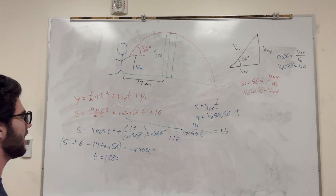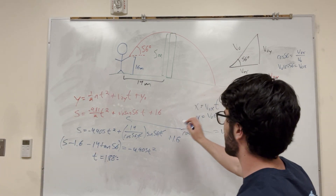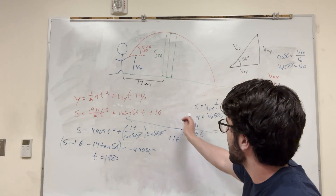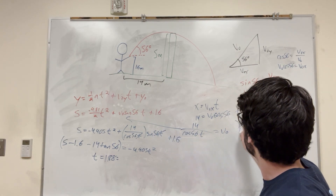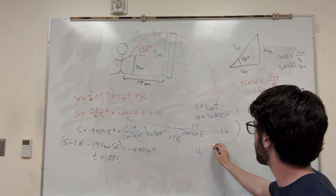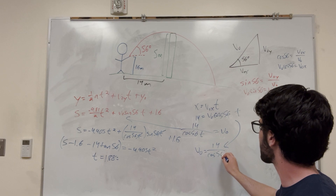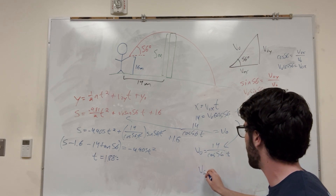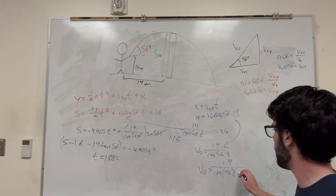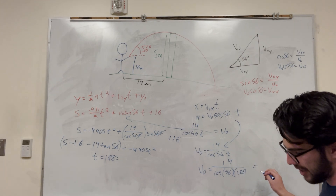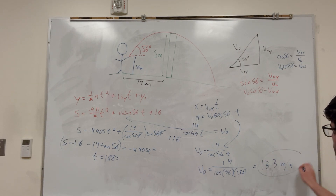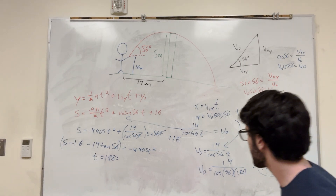So we have time, and then all I need to do is find v-naught. This is a way simpler equation — you can plug it into either one of these. You should probably do that if you're doing a test — plug it into both equations and see if you get the same v-naught. So we have that v-naught is equal to 14 over cosine 56 times T. So then v-naught equals 14 over cosine 56, and then T is 1.88. And you're going to get v-naught is equal to 13.3 meters per second.